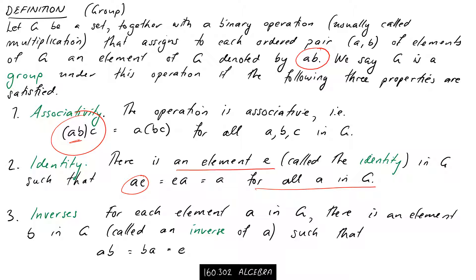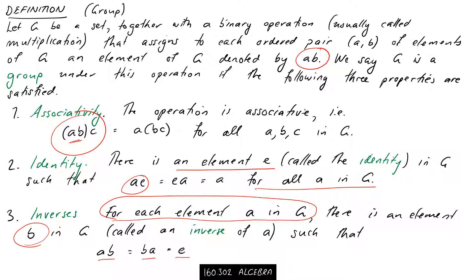The third property is inverses. For each element A in G, there is an element B in G — called an inverse — such that AB equals the identity and BA also equals the identity. For our dihedral group, that meant no matter which transformation I took, I could always find another one that undoes it, that multiplies with it to give the identity R0. If our set with operation satisfies these three properties, then it's a group.